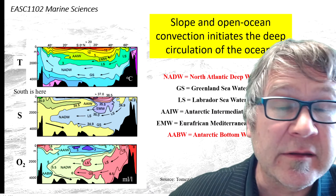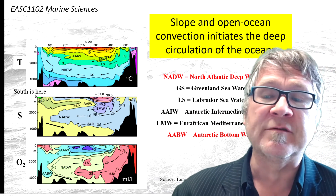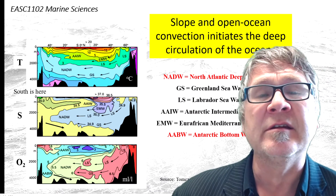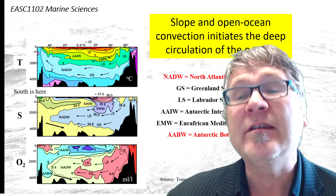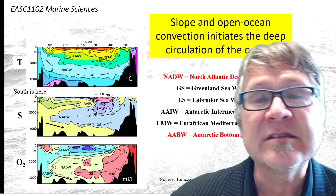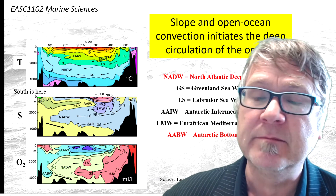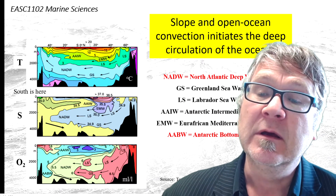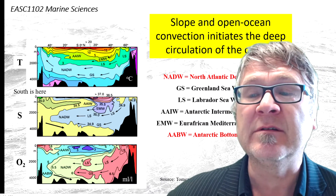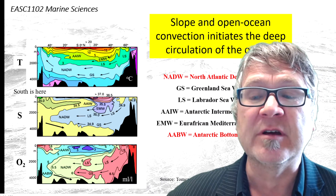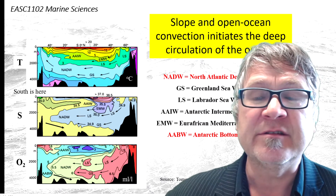You can have another look at the distributions of temperature, salinity, and dissolved oxygen in the Atlantic Ocean. I discussed this before in the previous lecture. What can you see in the temperature and the salinity distributions?